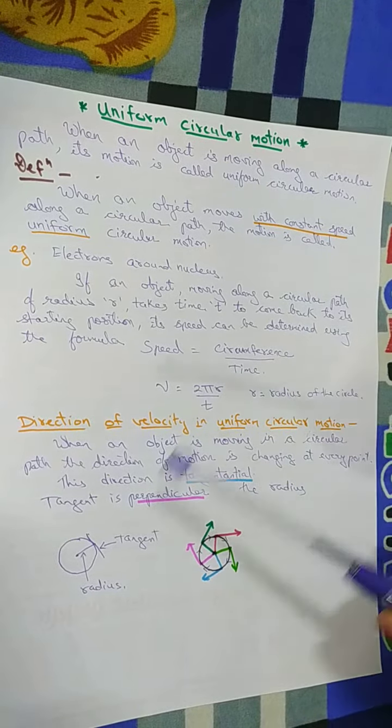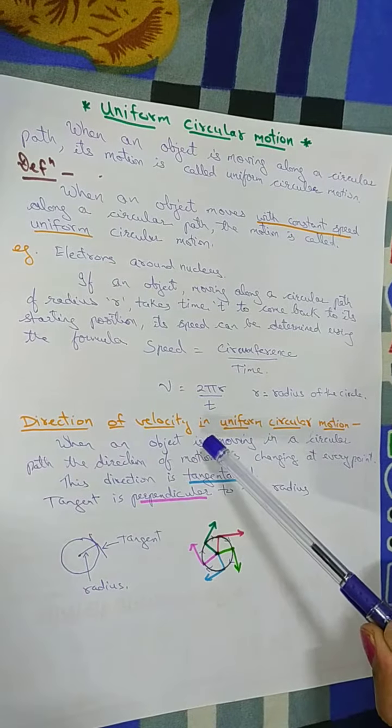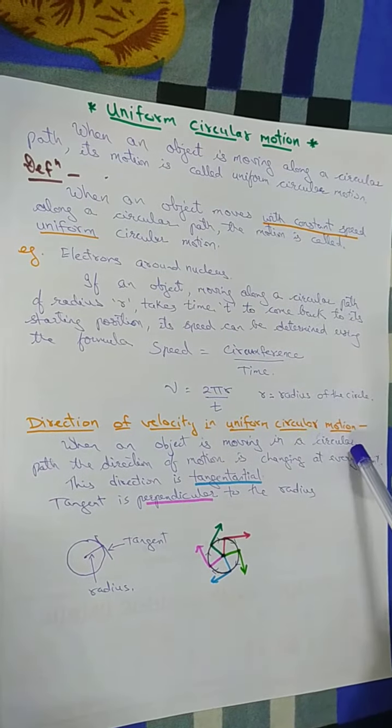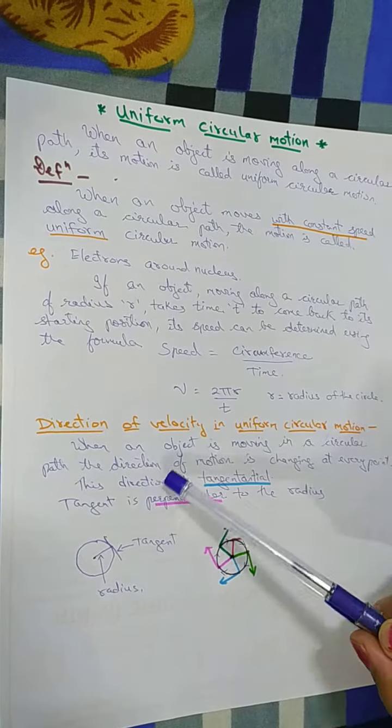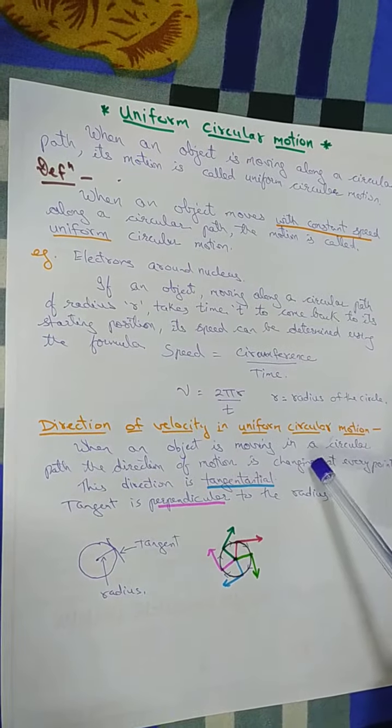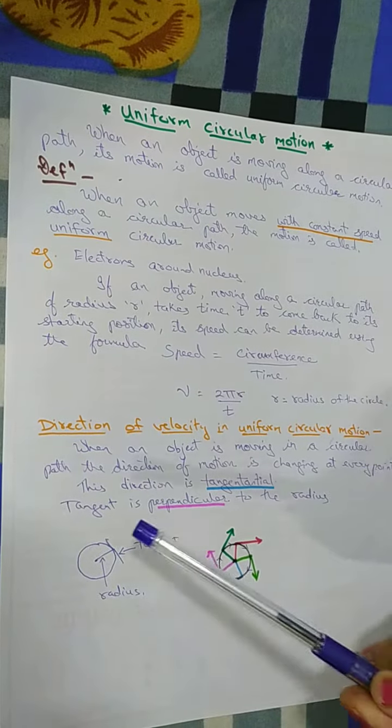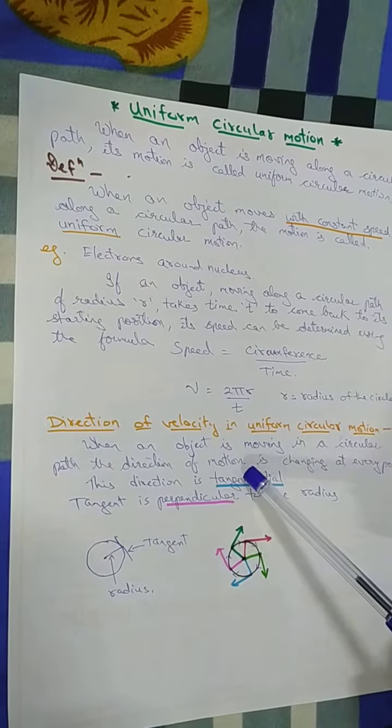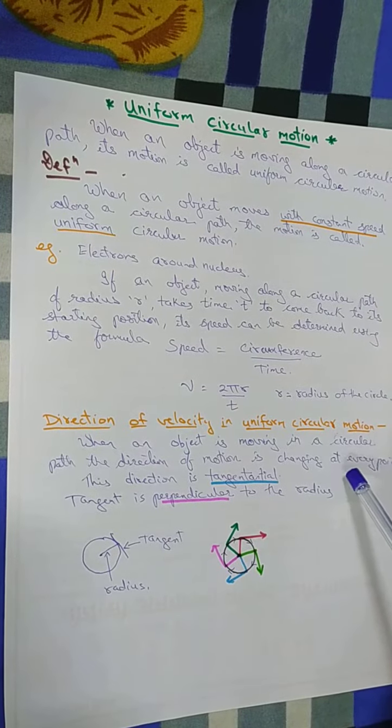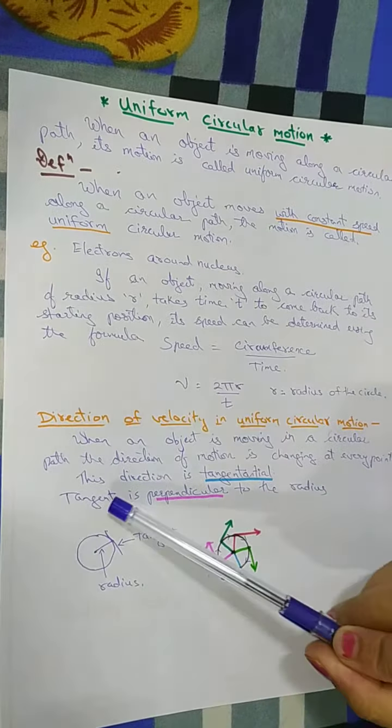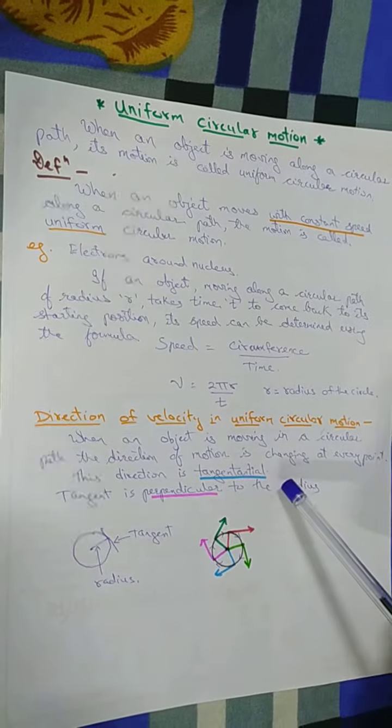So we have seen circular motion. Let us see the direction of velocity in uniform circular motion. When an object is moving in a circular path, the direction of the motion is constantly changing at every point and this direction is tangential.